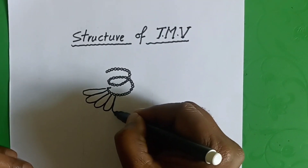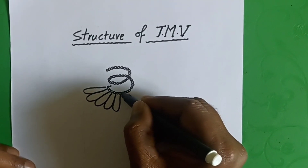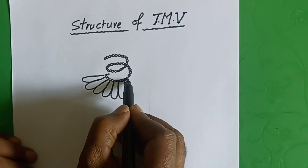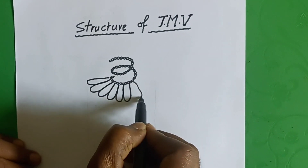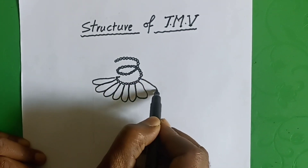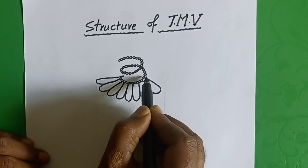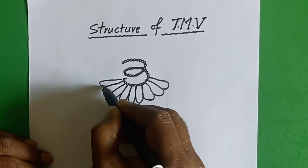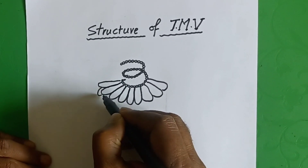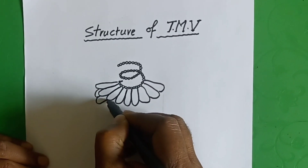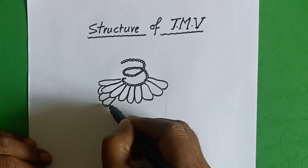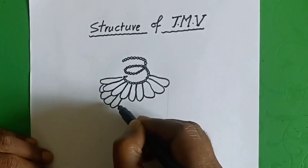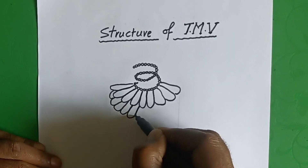Inside the Capsid, there is a single stranded spirally coiled RNA molecule consisting of 6500 nucleotides. This is the brief explanation of the structure of TMB.